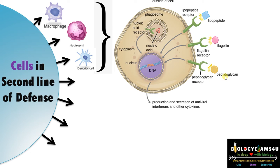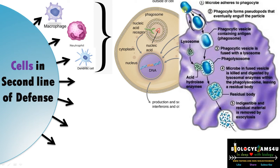After recognition by pattern recognition receptors, the next step is phagocytosis. The pathogen is engulfed and coated by a vesicle, forming a phagosome. The lysosome inside the macrophage then fuses with the phagosome, forming a phagolysosome. The lysosome contains acids and digestive enzymes that completely destroy the pathogen. The residual undigested matter is then removed by exocytosis. This is how professional phagocytes — macrophages, neutrophils, and dendritic cells — work as the first type of defensive cells to reach the site of infection.